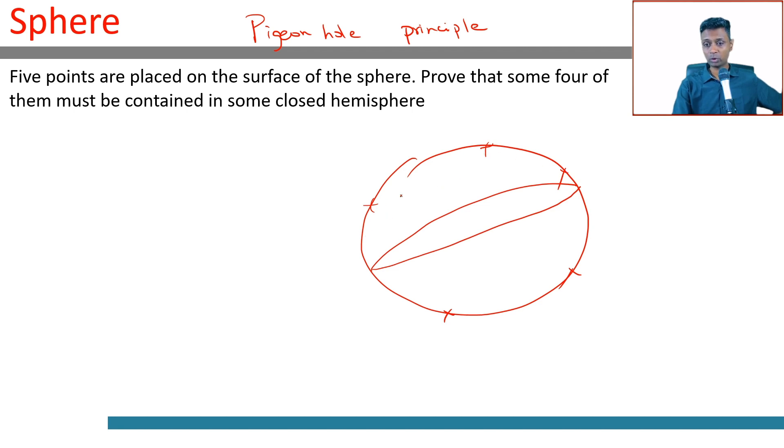These two seem close by, so I can create and carve out some hemisphere like this where these four will be in one half. Or I can carve out something like this where these four will be in one half. Remember it's not a circle—this is a sphere, so there is a surface angle to it, a three-dimensional angle. This can be curved and cut along this axis as well.